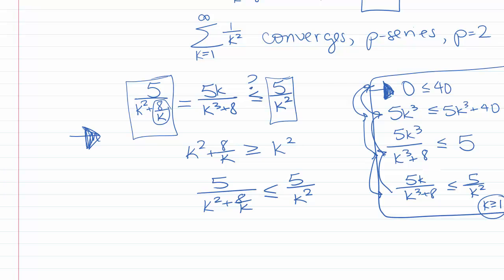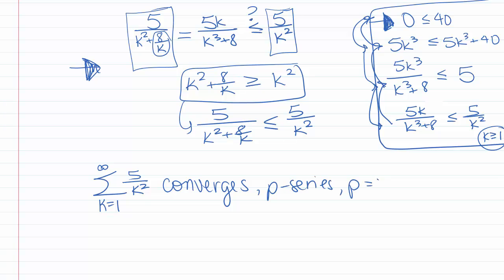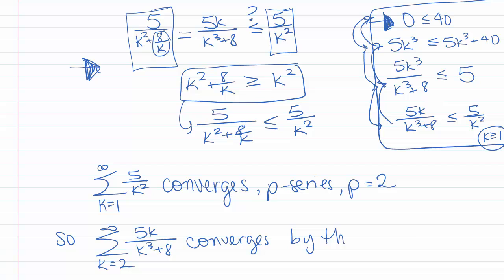So we can state that the sum k goes from 1 to infinity of 5 over k squared converges, because it's a p-series with p equal to 2. Therefore, the sum k equals 2 to infinity of 5k over k cubed plus 8 converges by the comparison test. Note that it doesn't really matter that we went from k equals 1 to k equals 2 here, because all that matters for convergence of a series is the tail. As long as the series converges eventually, no matter where we start, it's going to converge.